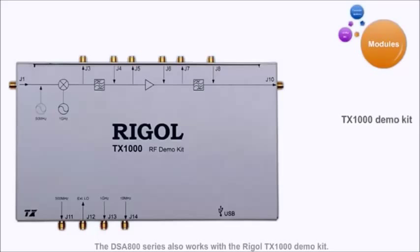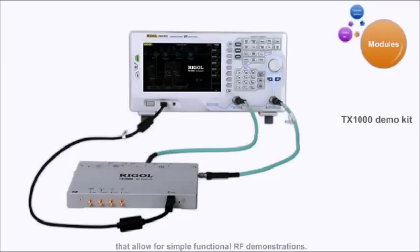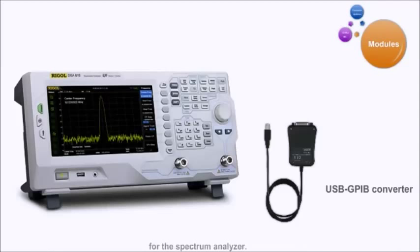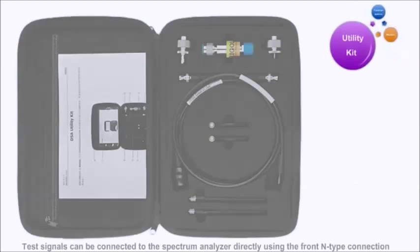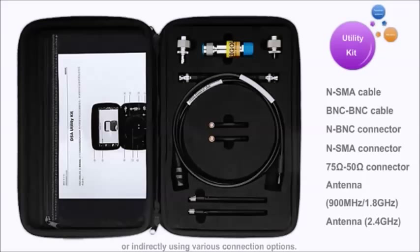The DSA800 series also works with the Rigol TX1000 demo kit. This includes an RF emission module with various configurations that allow for a simple functional RF demonstration. An optional USB to GPIB converter interface can be used to provide GPIB-compatible communications for the spectrum analyzer. Test signals can be connected to the spectrum analyzer directly using the front-end type connection or indirectly using various connection options. Rigol offers a number of connection options with an available utility kit designed to meet different measurement requirements.